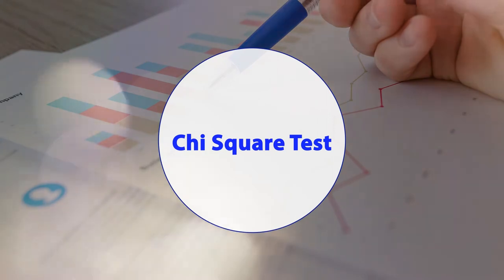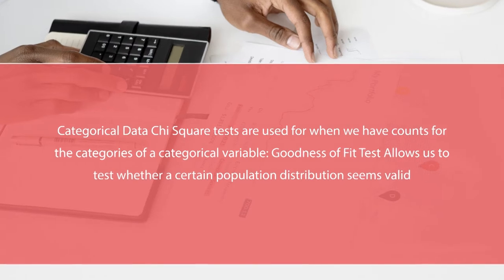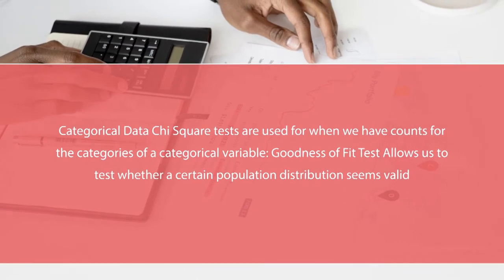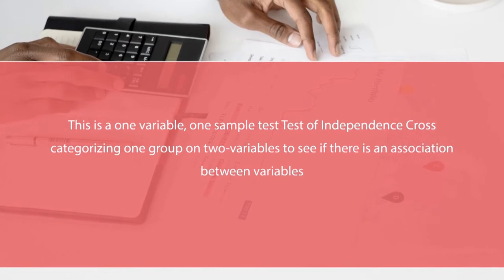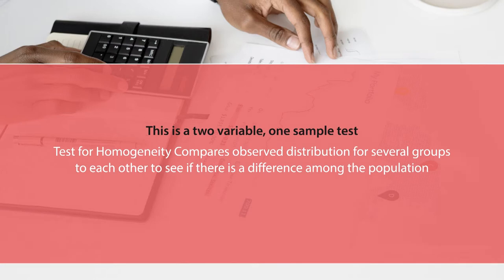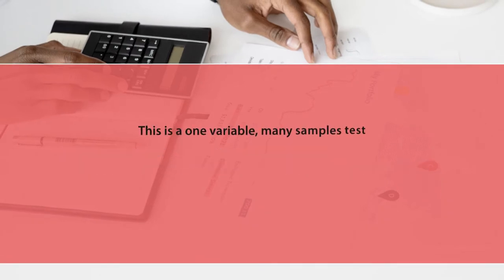This is part of our test series on testing the hypothesis. We have already talked about the preceding tests like the one-tail, two-tail test, F test, Z test, and T test. Now we are much more focused on the Chi-square test. Categorically, Chi-square tests are used when we have counts for categories of a categorical variable. The goodness of fit test is a one-variable, one-sample test; the test of independence is a two-variable, one-sample test; and the test for homogeneity is a one-variable, many-sample test.